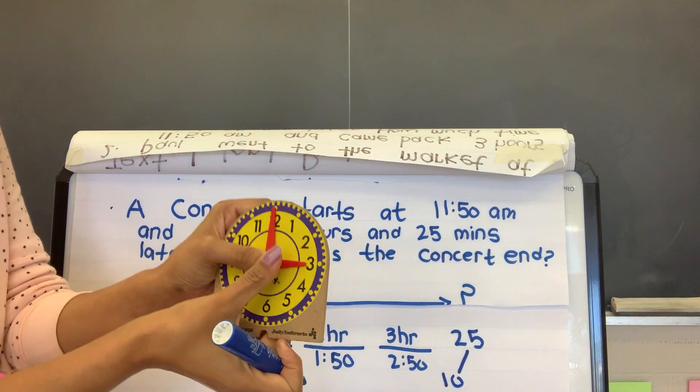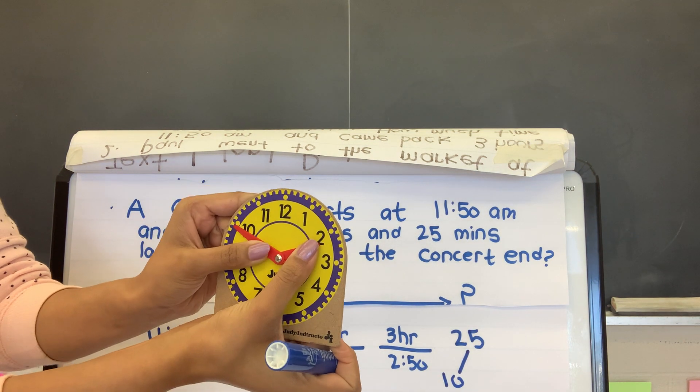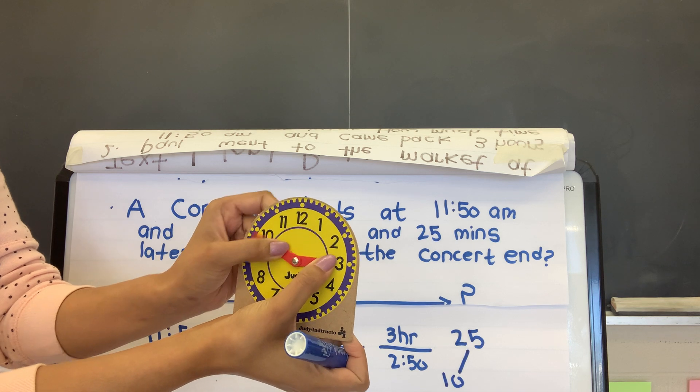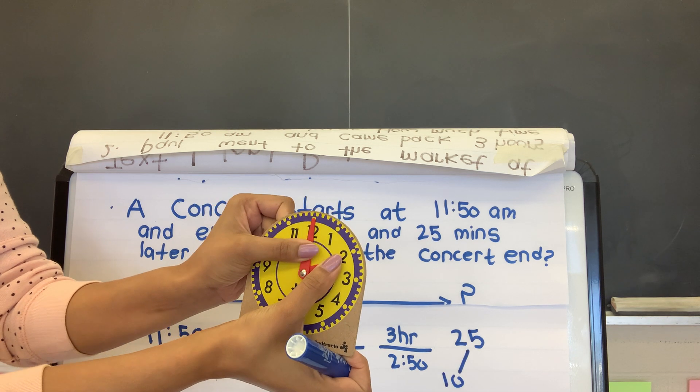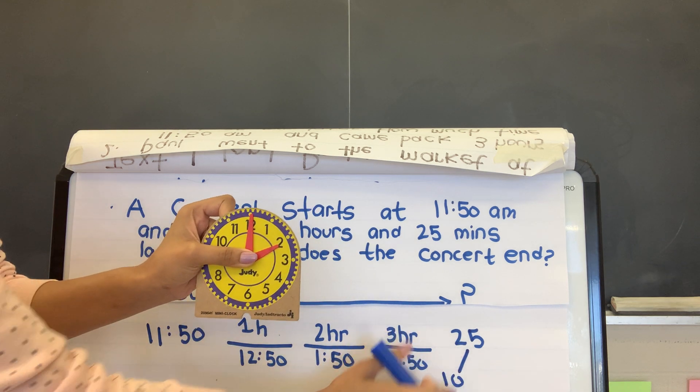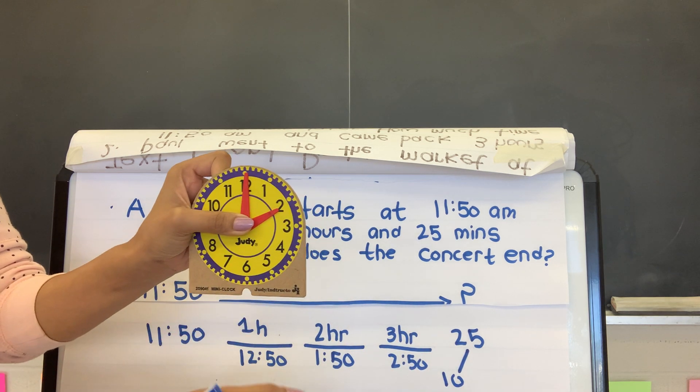So that means out of 25 minutes, I'm going to take away 10 minutes, because right from 2:50 to 3 o'clock, it's 10 minutes. 5, 10. So 10 minutes, and then out of 10 minutes, so I have all together, I need to have 25 minutes.